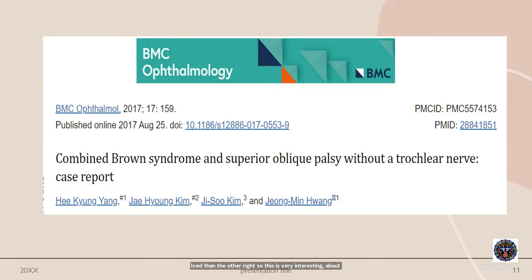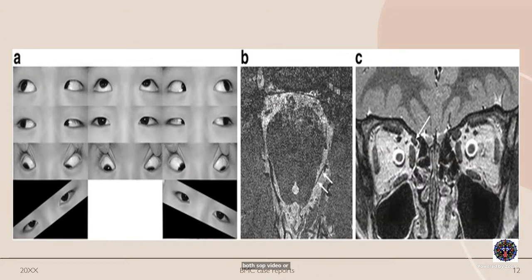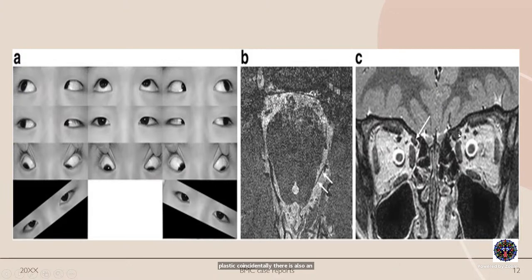Congenital Brown syndrome and congenital SO palsy can coexist in the same eye. This case of a child of Chinese origin, published in a Boston case report, shows a combination of both SO palsy and SO tendon-trochlea complex involvement — not much vertical deviation in primary position, defective elevation in adduction, and defective depression in adduction. The left eye is completely normal with a good trochlear nerve on the normal side, but absence of trochlear nerve and a hypoplastic superior oblique muscle complex on the affected side.